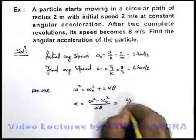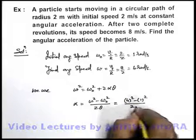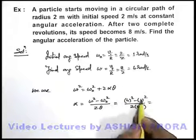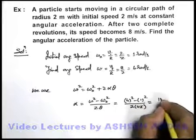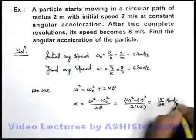So this will be 4 squared minus 1 squared divided by twice of 4π. This is 16 minus 1, which is 15 divided by 8π radians per second squared.